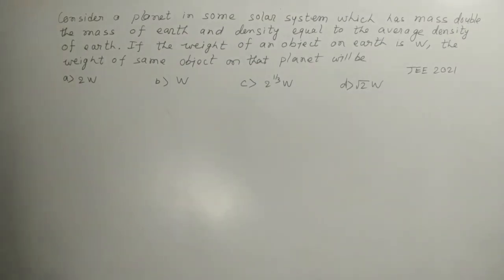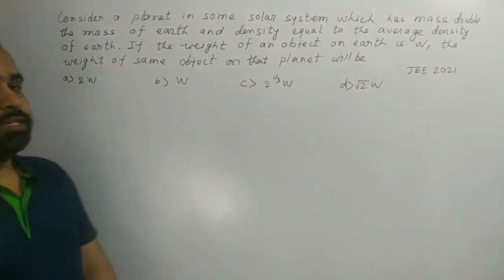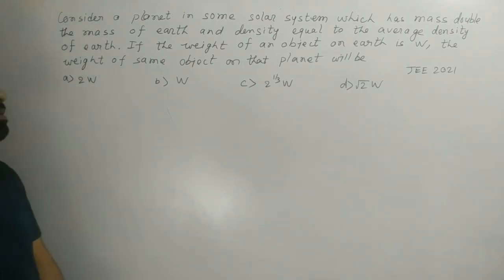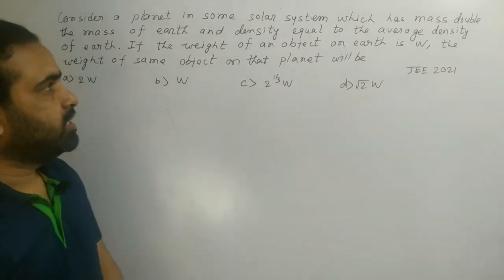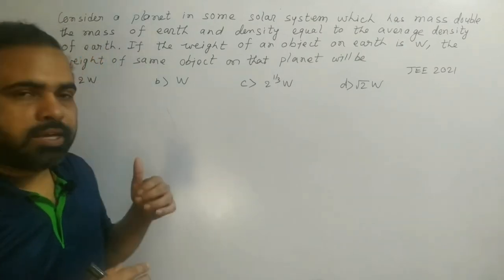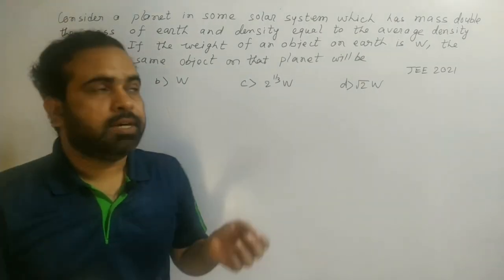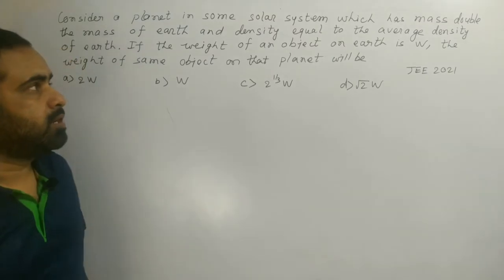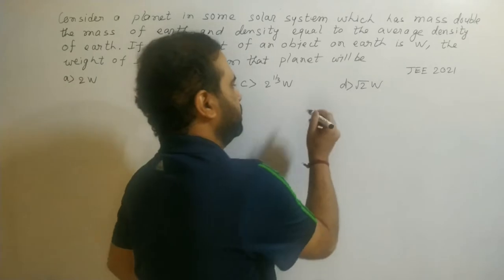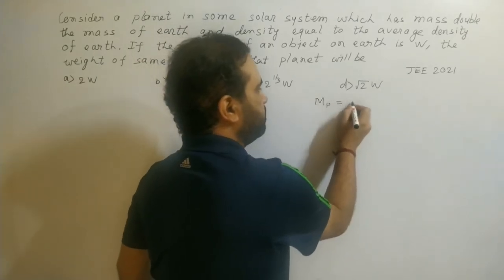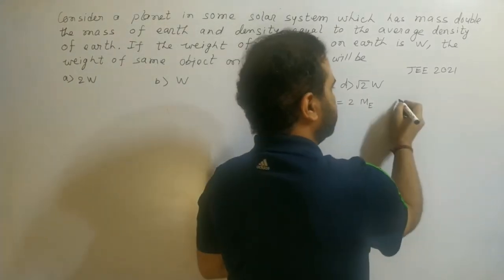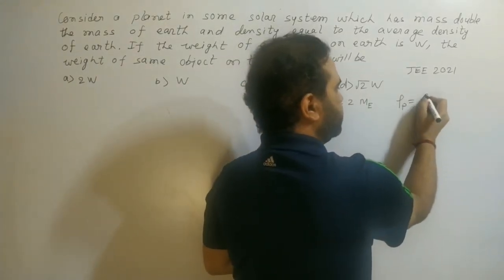The statement says: consider a planet in some solar system which has mass double the mass of the Earth, and density equal to the average density of the Earth. So the mass of the planet is double the mass of the Earth, and the density of the planet is equal to the density of the Earth.